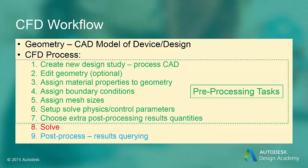The CFD process starts by creating a part or assembly in Inventor or a CAD program. This part or assembly is then transferred to the CFD software, where you create a new CFDesign study. The Edit Geometry task will clean up the geometry and remove geometric features that may cause meshing problems. Some geometry may come in cleanly and not require this step.